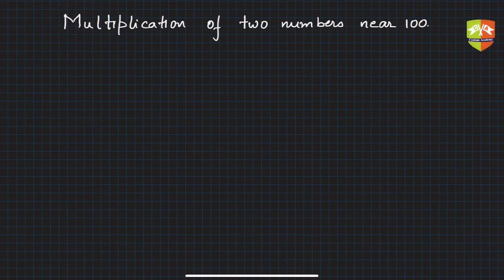Hello friends, in the previous session we saw multiplication of two numbers near 100, but those numbers were less than 100. Now this is case 2, where we are going to multiply two numbers which are both greater than 100.